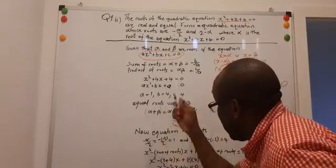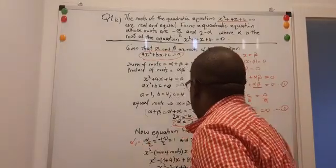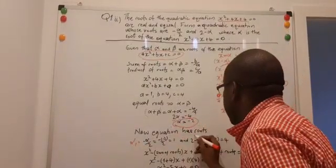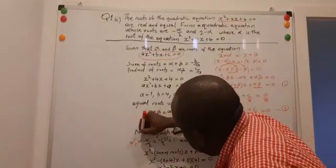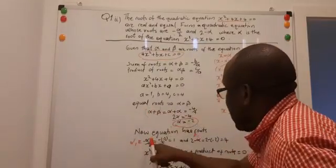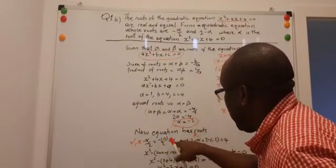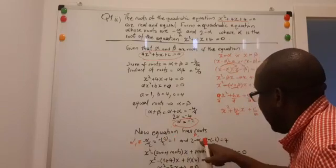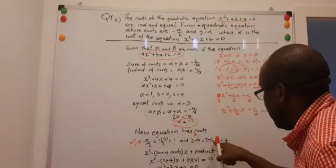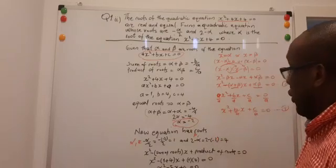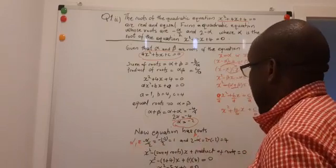So, the new roots of this equation will be α₁ = -α/2 = -(-2)/2, which becomes +2/2 = 1. And β₁ = 2 - α = 2 - (-2), which becomes 2 + 2 = 4.